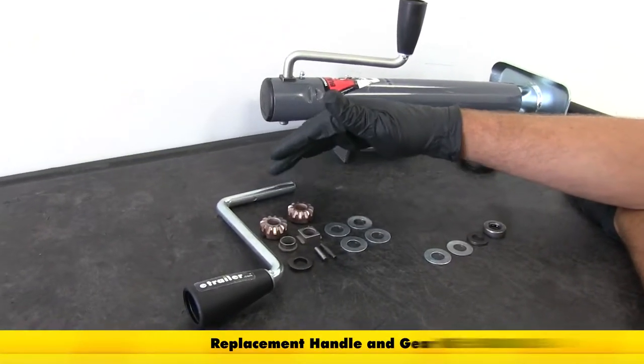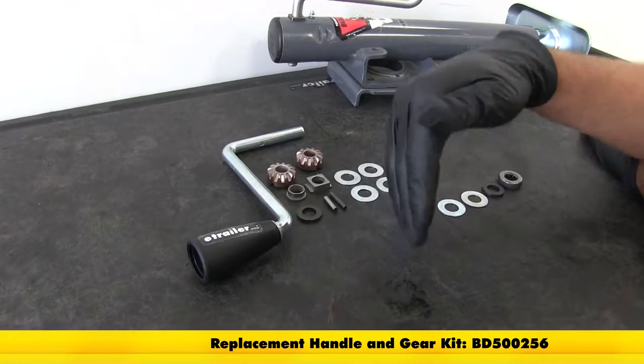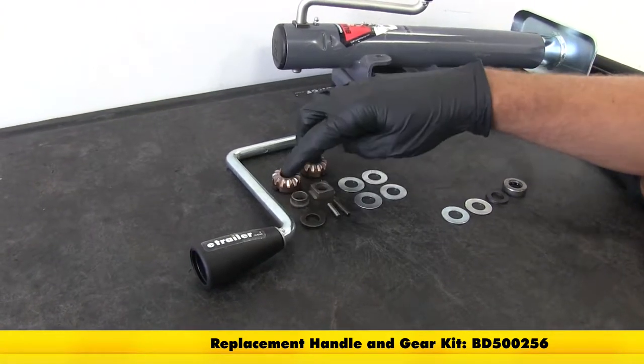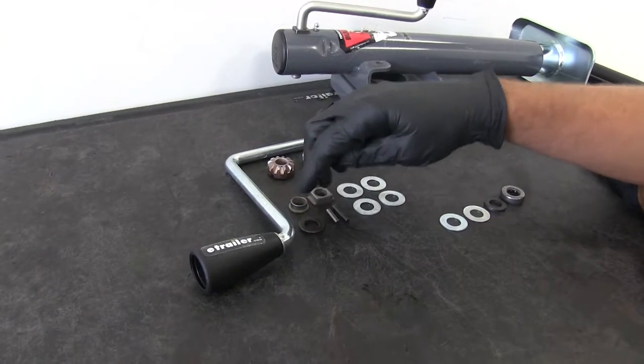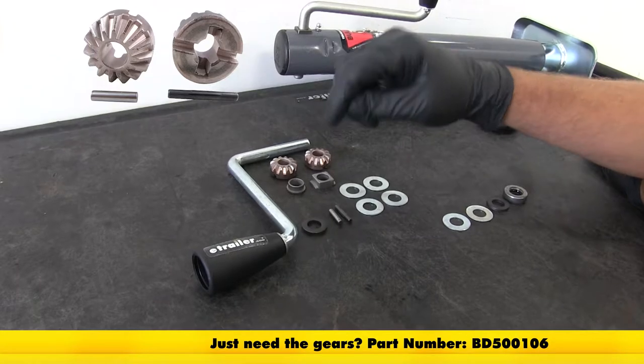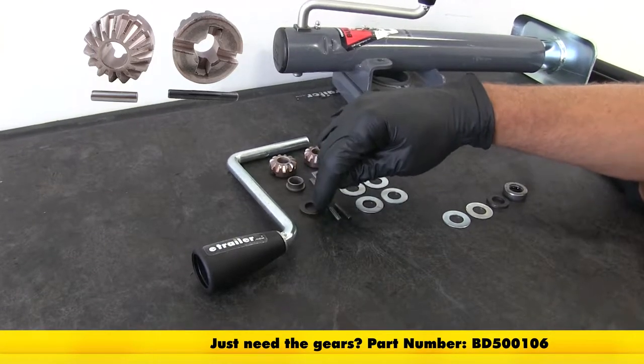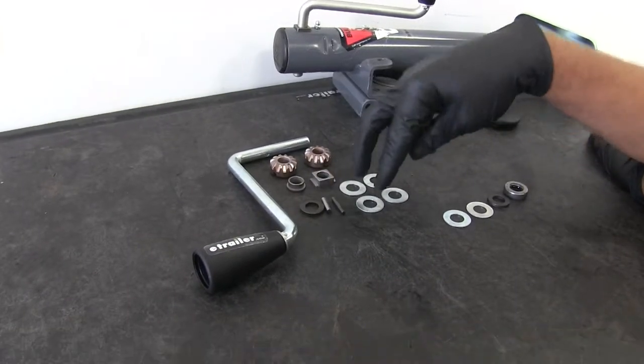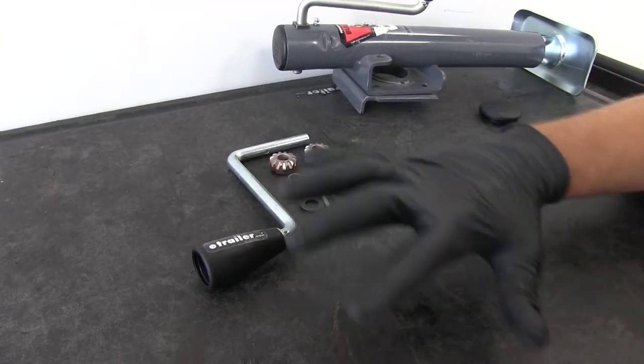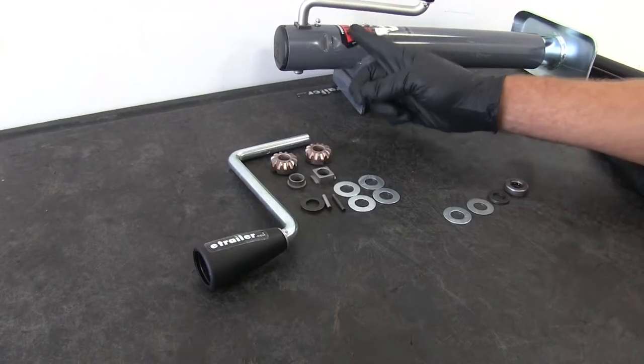We've got our replacement handle and gear kit. This is going to have just about everything we need to rebuild the jack. You can see we've got our bevel gears here, the flanged bushings that fit on the outside tube, the pressure bushing, the pins, and some washers. We've also got our handle. So this is going to take care of the complete upper end of the jack.